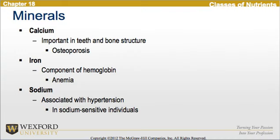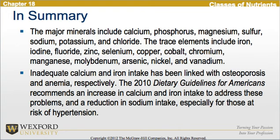Calcium plays an important role in teeth and bone structure and helps prevent osteoporosis. Iron is an important component of hemoglobin and helps prevent anemia. Sodium is associated with hypertension, especially in sodium-sensitive individuals. Inadequate calcium and iron intake has been linked with osteoporosis and anemia respectively. The 2010 Dietary Guidelines for Americans recommend an increase in calcium and iron intake and a reduction in sodium intake, especially for those at risk of hypertension.